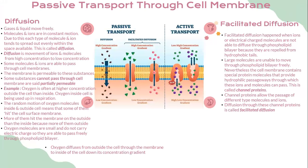Let's look into how diffusion and facilitated diffusion work — this is called passive transport through the cell membrane. Diffusion is a process whereby gases and liquids move freely. Molecules and ions are in constant motion and tend to spread out evenly within the space available. Diffusion is the movement of ions and molecules from high concentration to low concentration. Some molecules and ions are able to pass through the cell membrane — the membrane is permeable to these substances — while some substances cannot pass through, making it partially permeable.